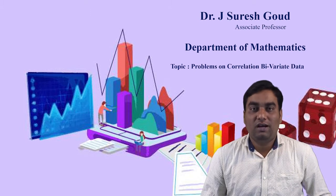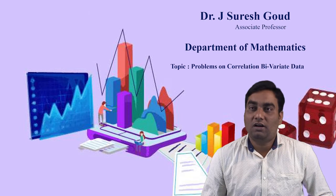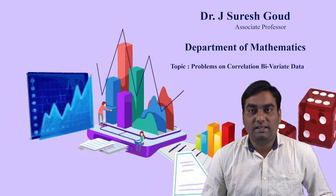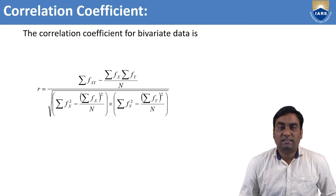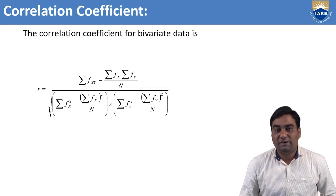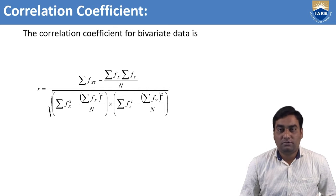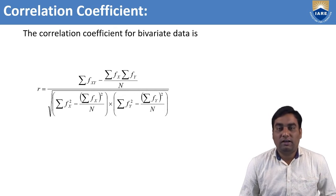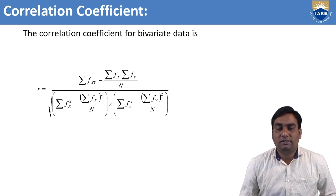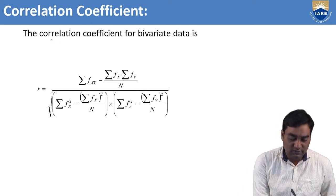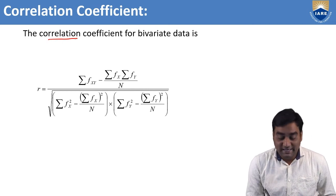Today we are going to discuss different types of problems on correlation, especially for bivariate data. In the last session, we discussed what is correlation, what is the relationship between two variables, and we discussed equal or repeated ranks and rank correlation coefficient. Now we are going to discuss the same correlation for bivariate data.